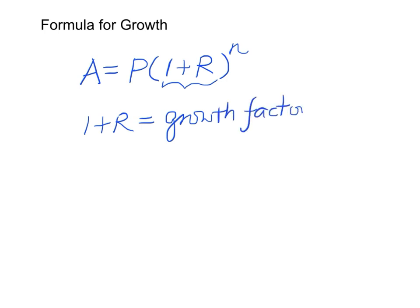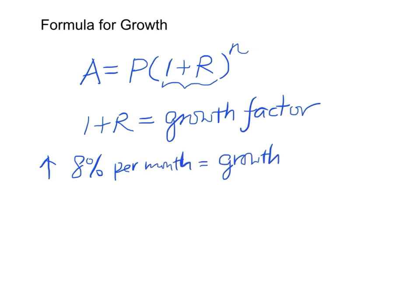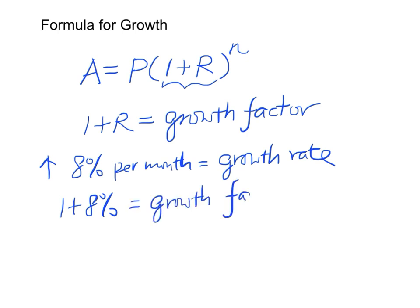Taking the Facebook example, the eight percent monthly increase is the growth rate, and one plus eight percent is the growth factor. We can see that the growth factor will always be greater than one, so that the original value keeps increasing from time to time.